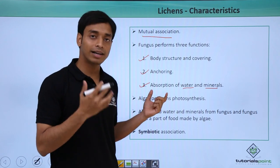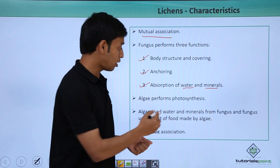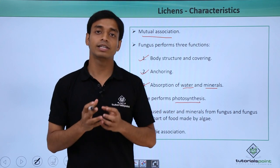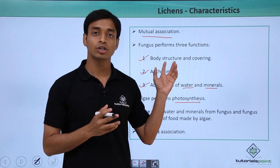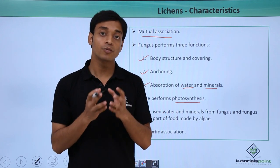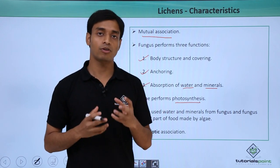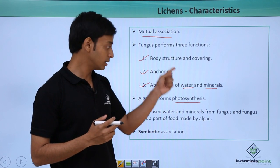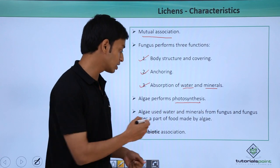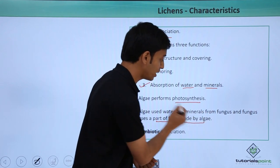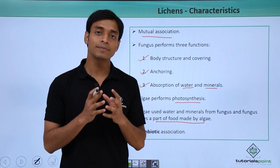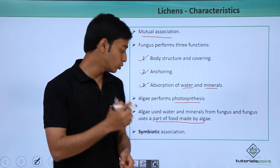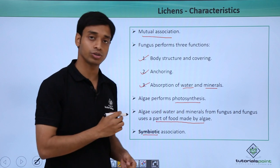Now let's see what the alga is performing. The alga performs photosynthesis, so it is the photosynthetic component of the lichens. It can perform photosynthesis, meaning it can make food. The alga uses water and minerals from the fungus, and in turn the fungus uses a part of the food made by the alga. This is a mutual relationship known as a symbiotic association.